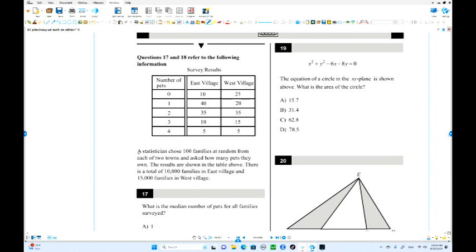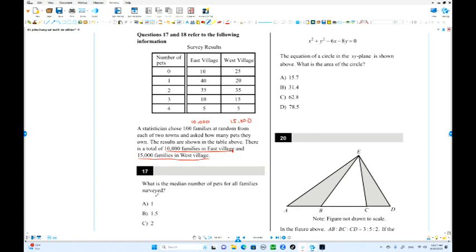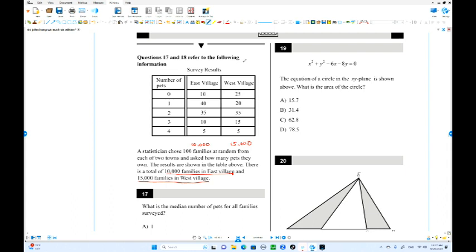Number 17, 18. 100 families at random from each of two towns, 100 each. The results are shown in the table above. There are a total of East Village 10,000 people and 15,000. The real population is 10,000 and 15,000. What is the median number of pets for all families surveyed? In the middle. The total is 200. The exact number divided by 2 is 100.5. We can check around the highest point.